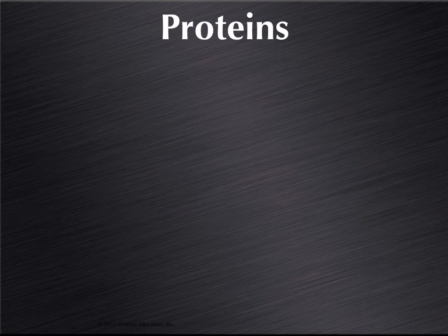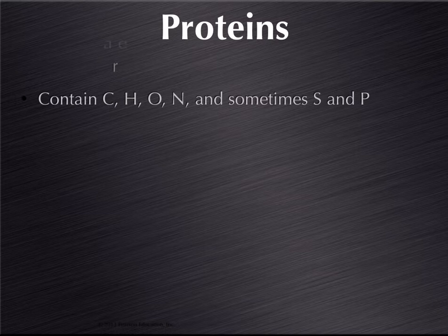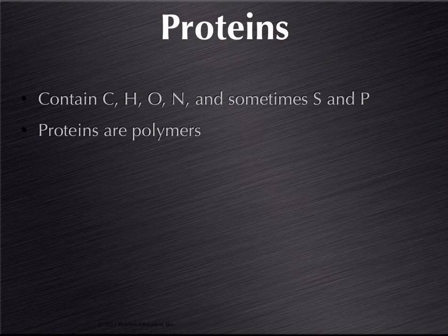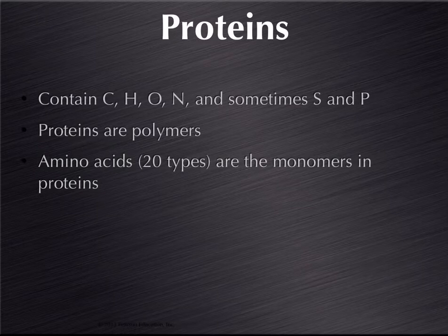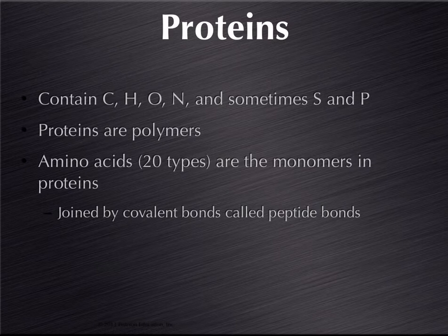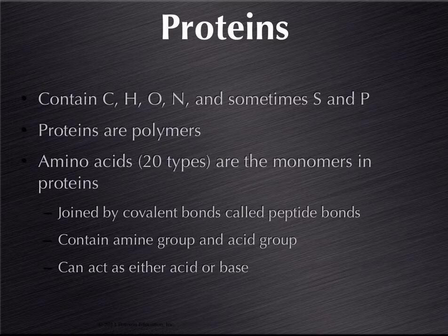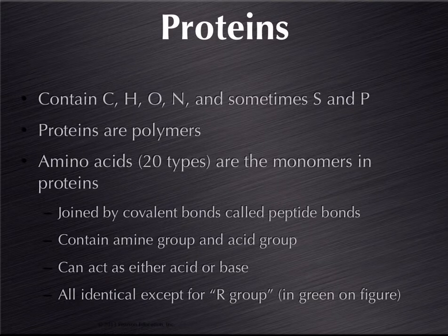As we come in we get our first look at proteins. These tend to have four main chemical elements and occasionally a couple of others. They always have carbon and hydrogen, oxygen and nitrogen. Sometimes we'll see some sulfur as well as some phosphate. Typically proteins are going to be polymers. They're going to be long chains and the monomer here are amino acids. There are actually 20 different kinds of amino acids. They're linked together to make these long chains by covalent bonds that are called peptide bonds. They always contain an amino group and an acid group. Proteins are interesting in that they can act either as an acid or a base. They're all basically identical except for one little component on each of the 20 amino acids that varies, and that would be what we would describe as a variable or an R group.